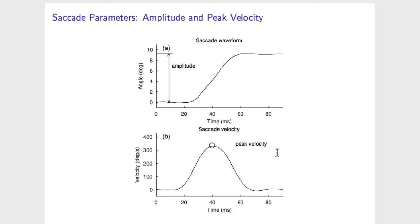Different saccades have different amplitudes and peak velocities. When the eye turns to a larger angle, it usually takes more time, and usually the eye reaches a higher peak velocity. Let us look at three different saccades made by the same person.